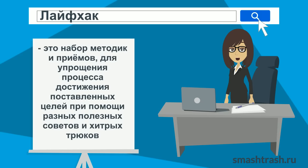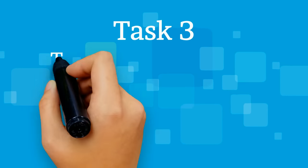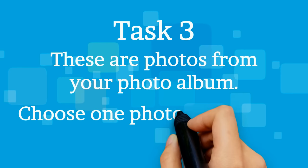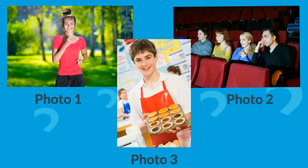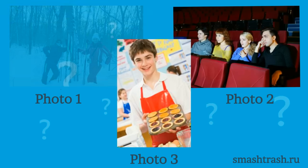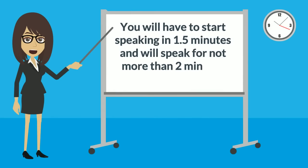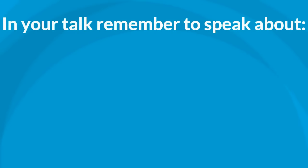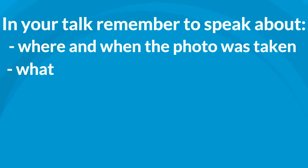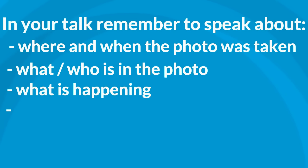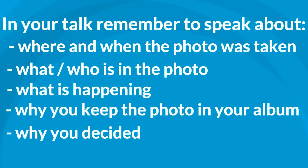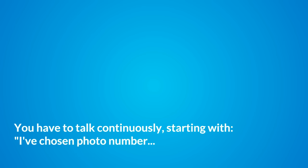I'll show you how to use the module answer from my previous video to describe a completely different picture. I think you remember that in Task 3 you need to choose one photo to describe to your friend. You will have to start speaking in one and a half minutes and will speak for not more than two minutes. In your talk remember to speak about where and when the photo was taken, what or who is in the photo, what is happening, why you keep the photo in your album, and why you decided to show the picture to your friend. You have to talk continuously, starting with 'I've chosen photo number...'